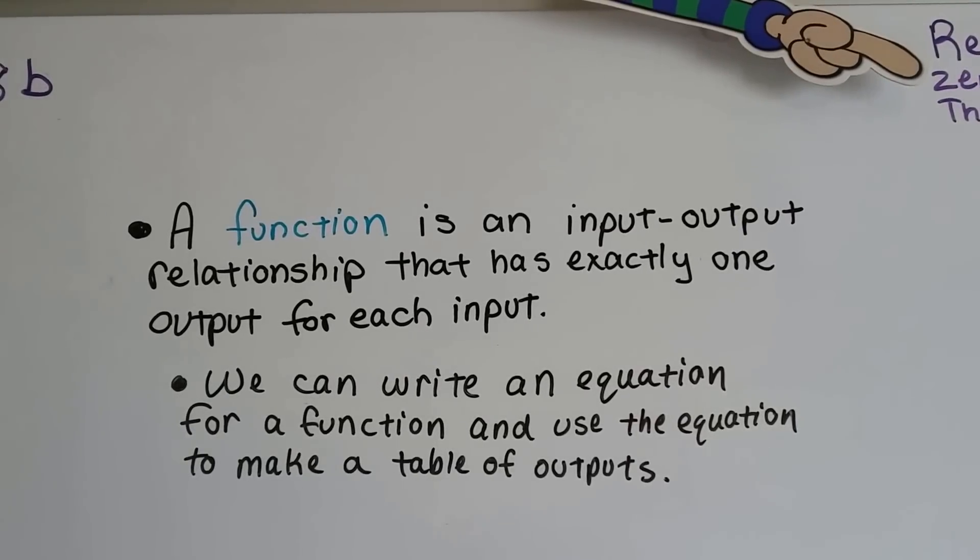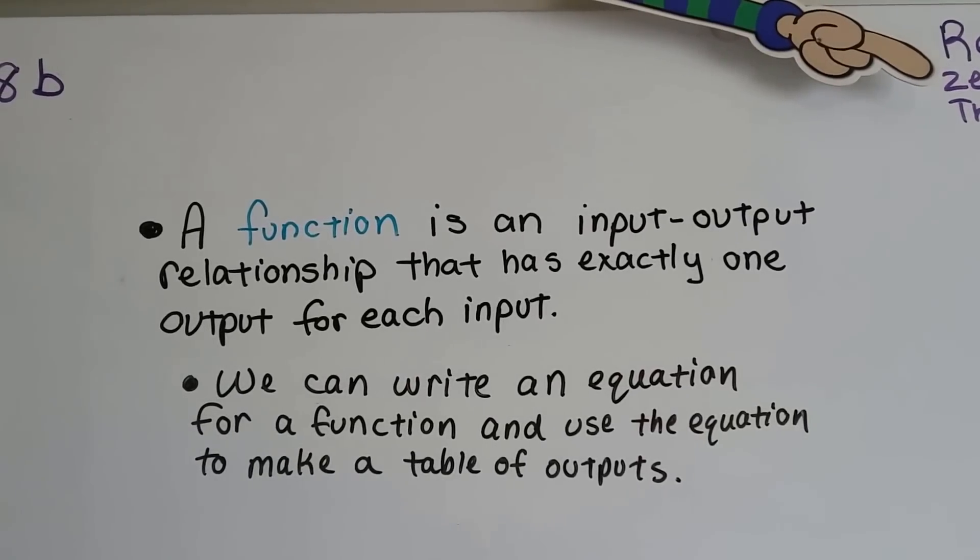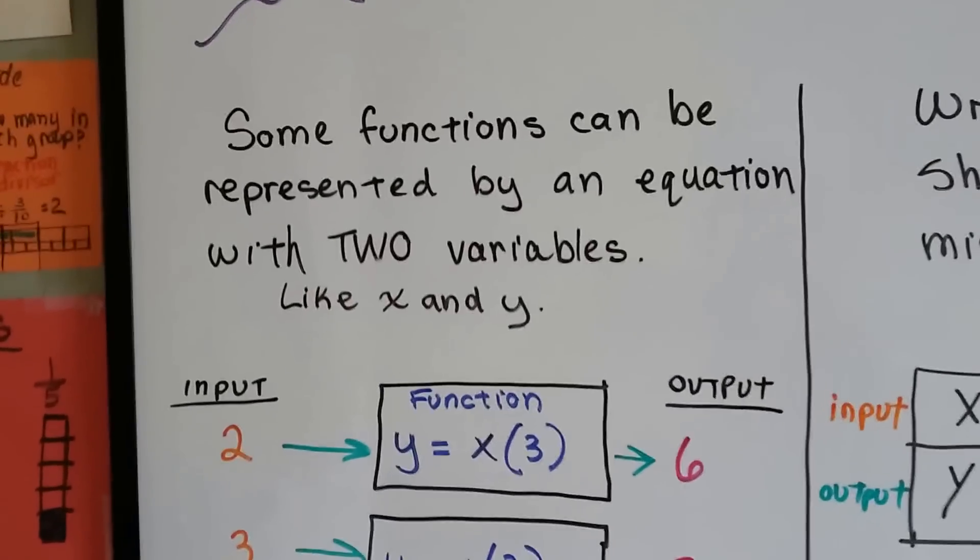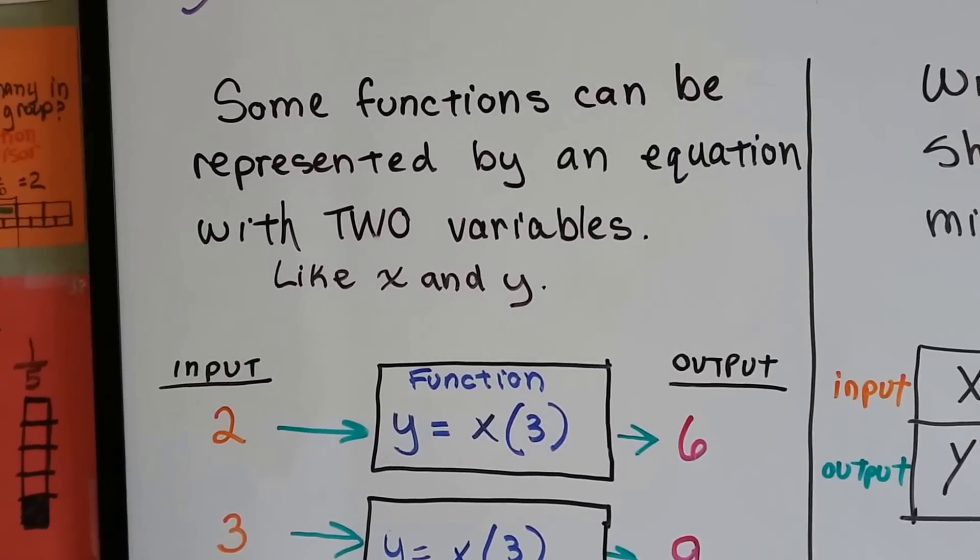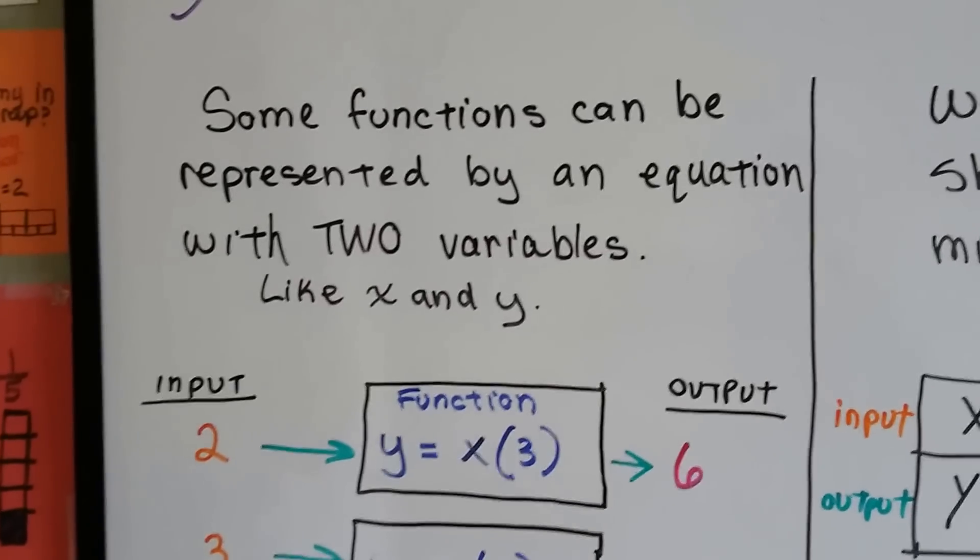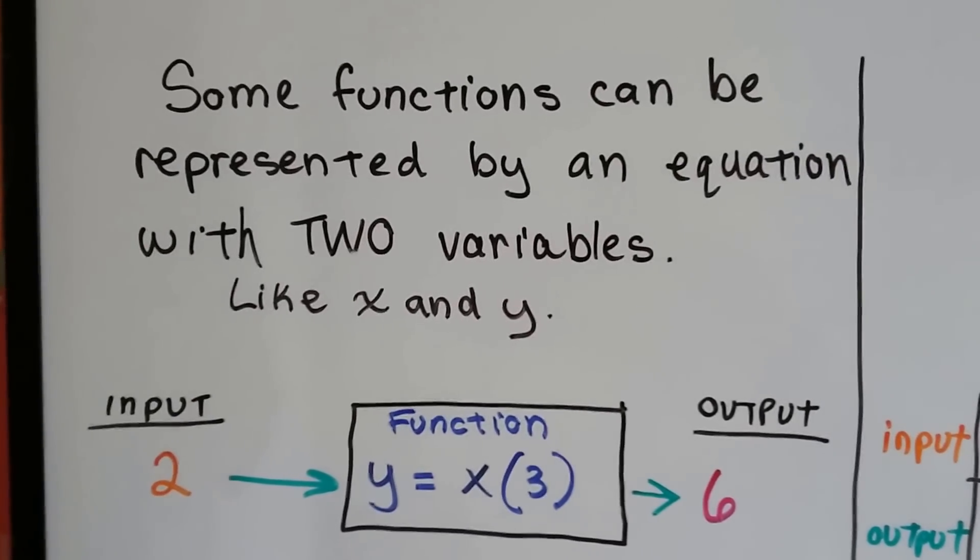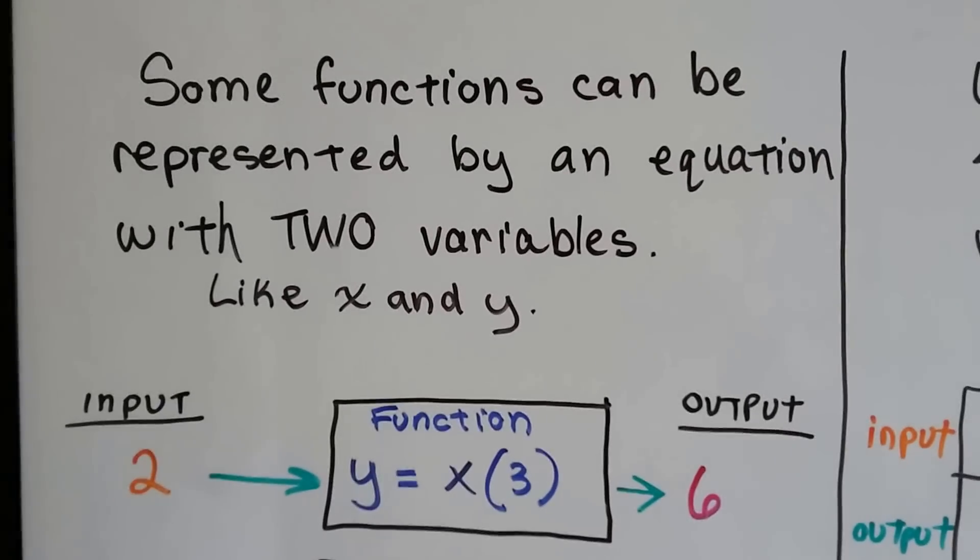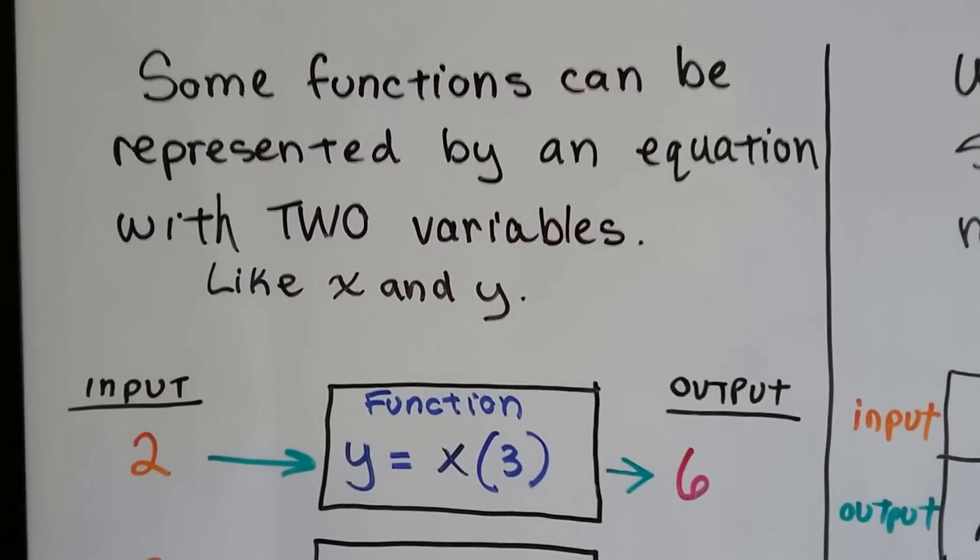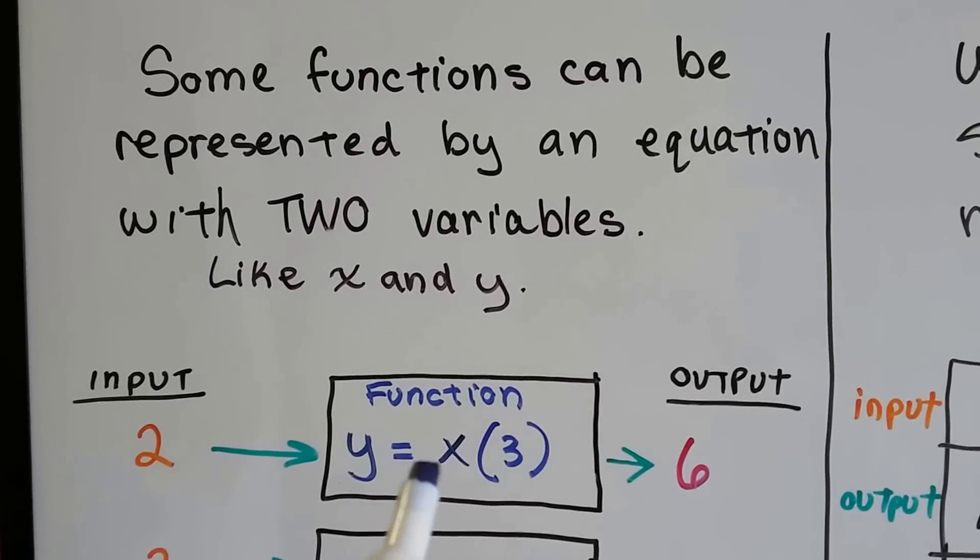We can write an equation for a function and use the equation to make a table of outputs. Some functions can be represented by an equation with two variables, like x and y. With our little function machine here in the center, we've got our input on this side and our output on this side. And here's our function, it's our rule.